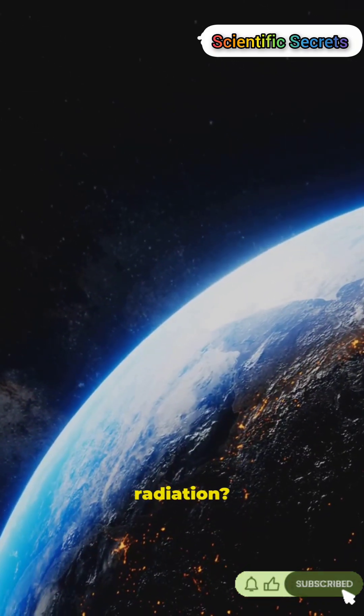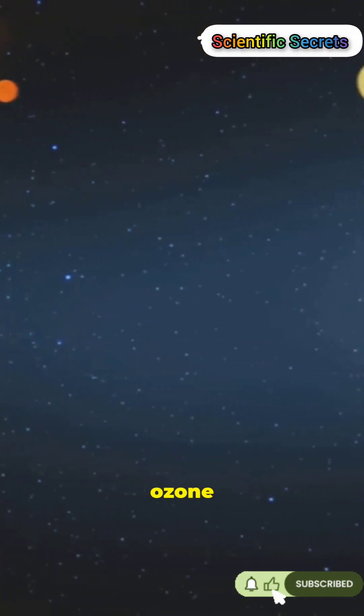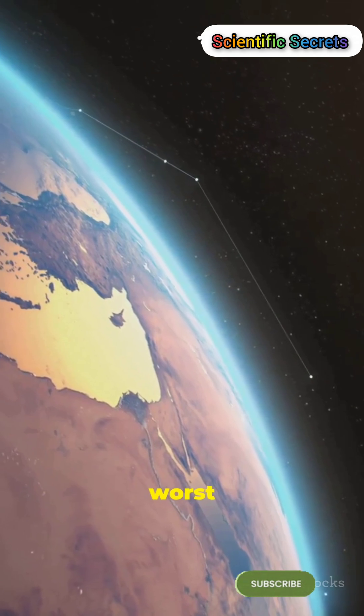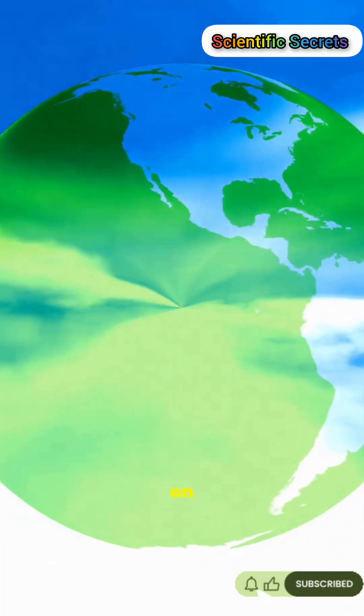Why does life survive the sun's intense radiation? A thin layer of ozone high above us blocks the worst ultraviolet rays. Here's how it really saves life on Earth.